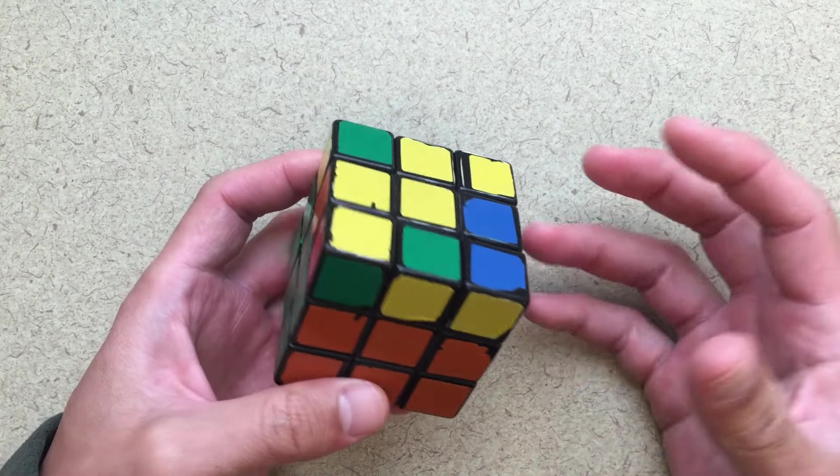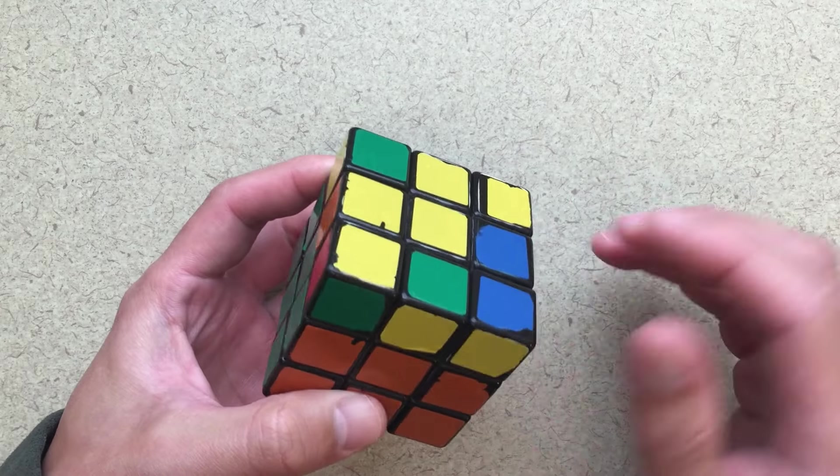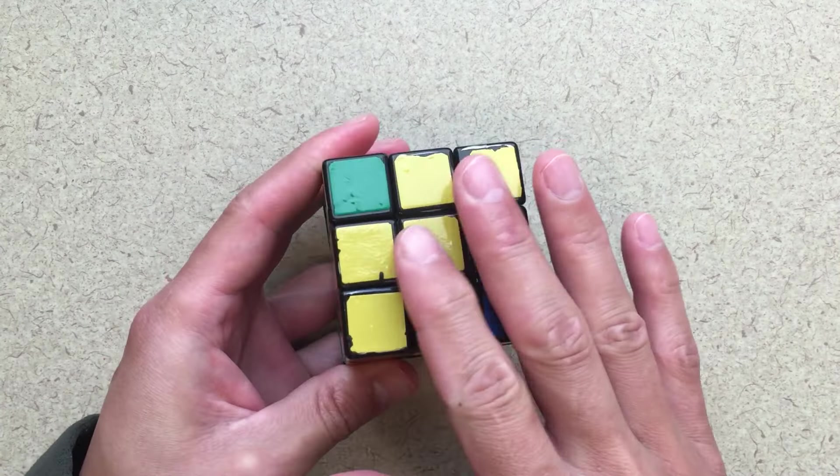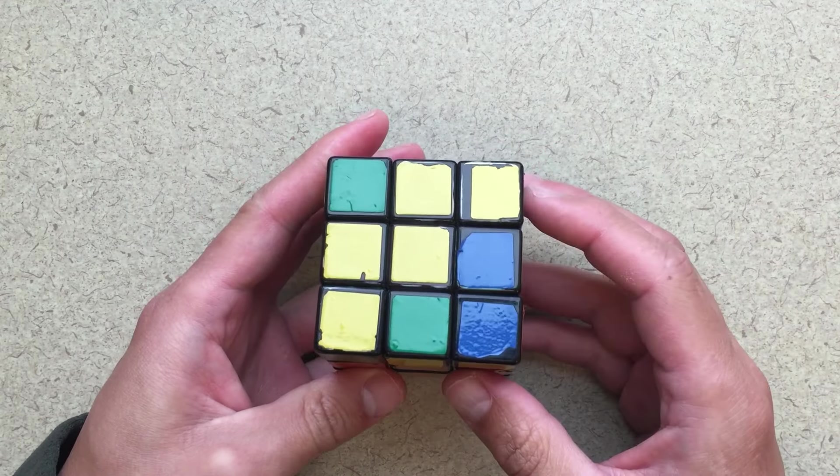So that's going to be basically our strategy. We're going to apply a set of moves to move these things around, and they're not going to mess up the bottom two layers, those are going to stay intact, and then eventually we'll be able to solve the last layer as well.